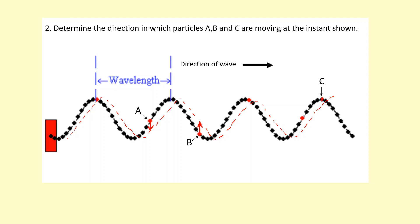Now C is actually not moving. The reason why C is not moving is because it's reached its maximum and it has to stop before it starts to head down. So it is about to head down, but at the instant that's shown, C is going to be stationary.